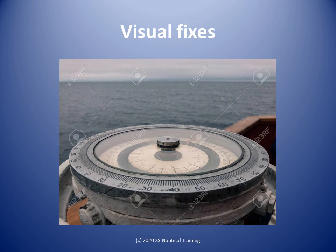Visual fixes, with carefully observed position lines, are very accurate. Unfortunately, it is the least practiced position fixing method in spite of being accurate. All it requires is a visual target and a compass for taking its bearing. When there are two charted objects visible from the ship, the bearings of the two objects can give a position fix for the ship. For greater fix accuracy, the angle between the two bearing position lines should be neither too narrow nor too wide. Some navigators consider a separation angle of around 45 degrees to be ideal.